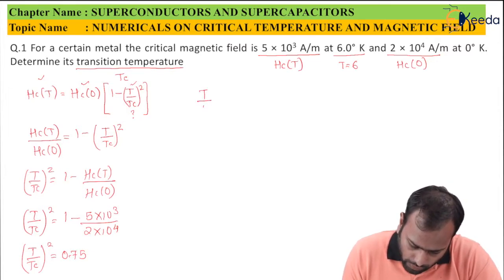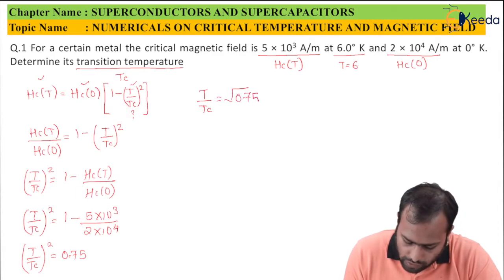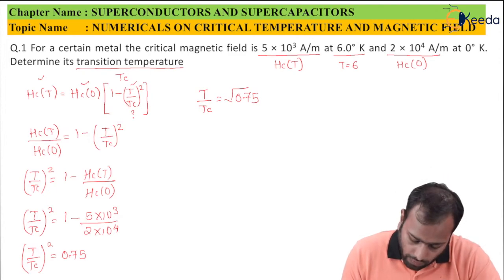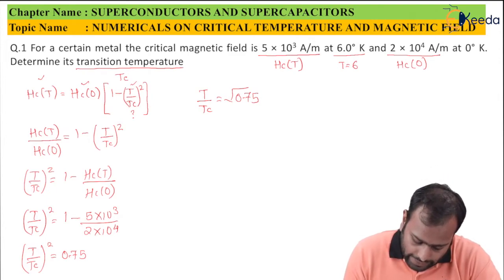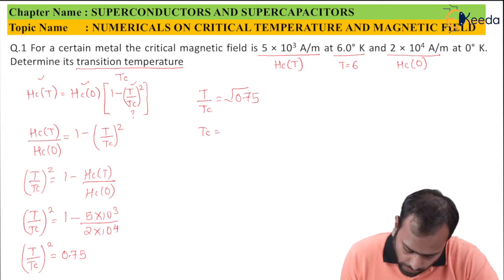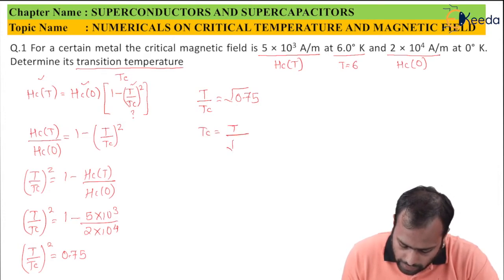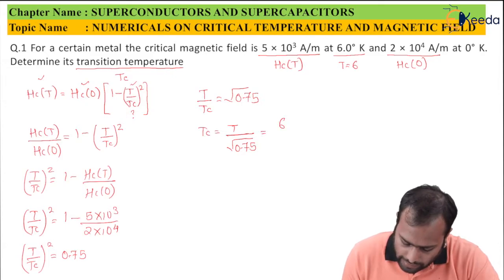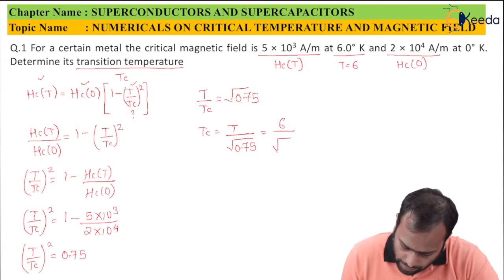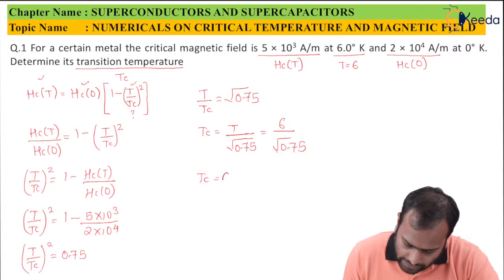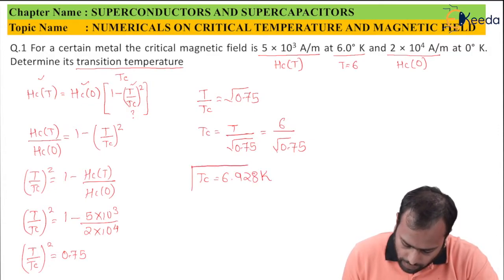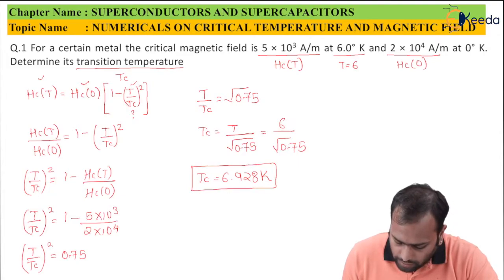So T/Tc = √0.75. We want the value of Tc, the transition temperature, so Tc = T/√0.75 = 6/√0.75. On solving, you get the value of Tc as 6.928 Kelvin. This is the transition temperature.